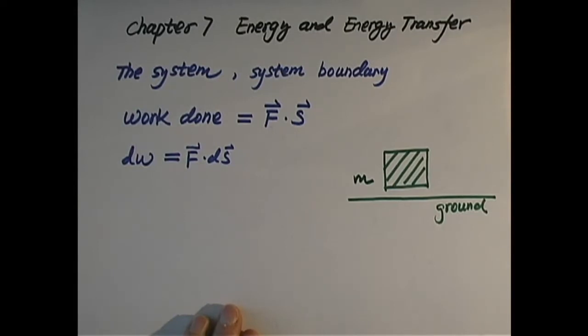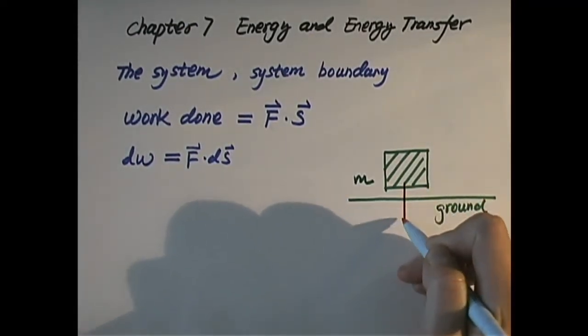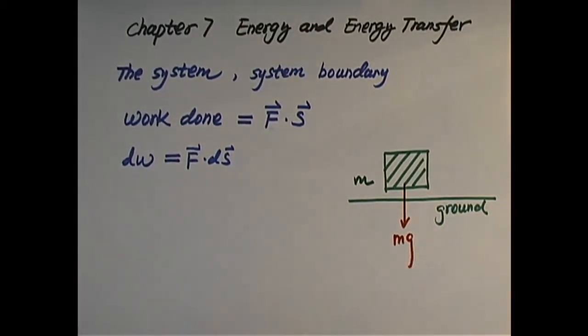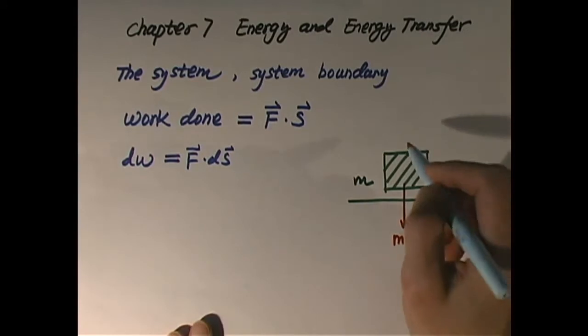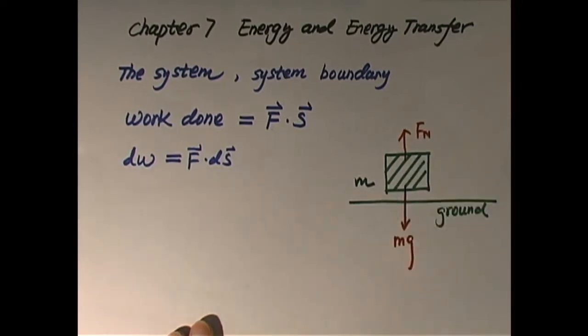And then we ask this question: what does the environment do to this object? As we learned from chapter 5, at least there are two forces on the object. One is gravity, which is mg. The other one is the normal force from the ground, which is Fn. So at least we have two forces on the object. That's what the environment does to our system.